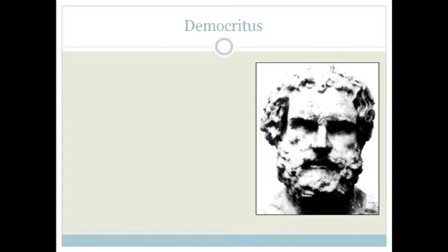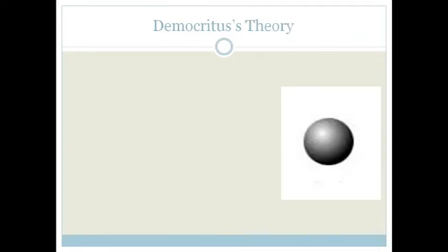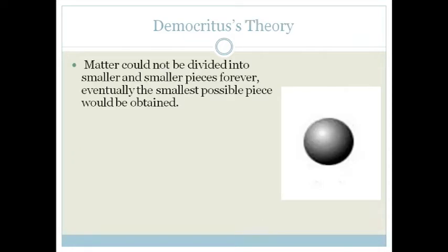So let's start off in 400 BC with a Greek philosopher by the name of Democritus. Now in those days the philosophers were the scientists and mathematicians and chemists of the day, and they used to ask questions and try and solve what is going on in this world. He asked, could matter be divided into smaller pieces forever? And he concluded that matter could not be divided into smaller and smaller pieces forever. Eventually the smallest possible piece would be obtained.